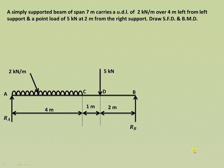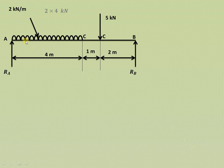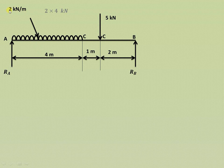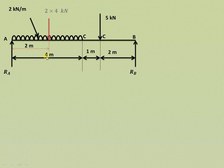The first step is to find the reactions RA and RB. The UDL is 2 kN per meter, meaning for 1 meter length the load is 2 kN. Over a 4 meter length, the total UDL equals 2 × 4 = 8 kN. We convert this UDL into an equivalent point load and allow it to act at the center of the 4 meter length, that is at 2 meters, as shown.